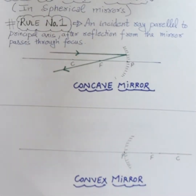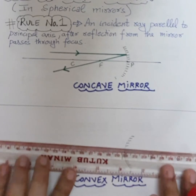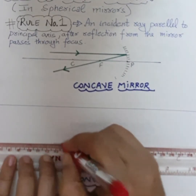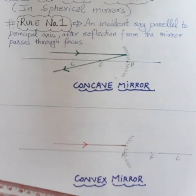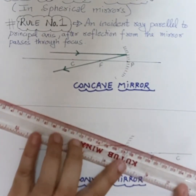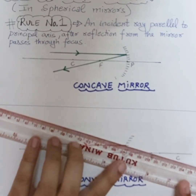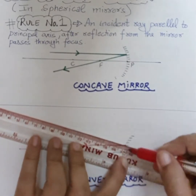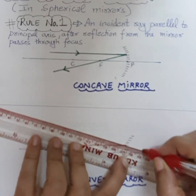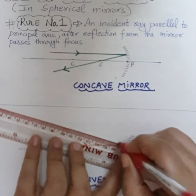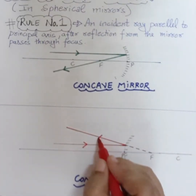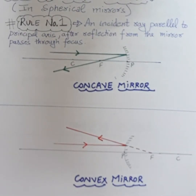Focus and centre of curvature. So one ray which is parallel to the principal axis, after reflection from the mirror, will pass through focus. So behind the mirror we have to join it with the focus - behind we show a dotted line, and in front a straight line. This is the reflected ray. So rule number 1: an incident ray parallel to the principal axis, after reflection from the mirror, passes through focus.